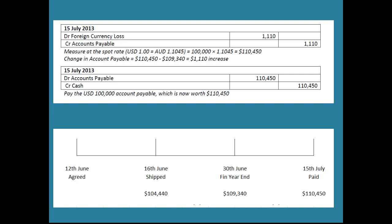At payment, we wouldn't be giving them $110,450 Australian — we'd be converting and giving them $100,000 US, but the accounting captures that. The accounts payable is removed because we paid it, and we reduce cash accordingly.